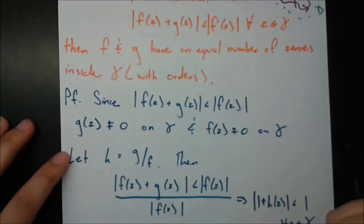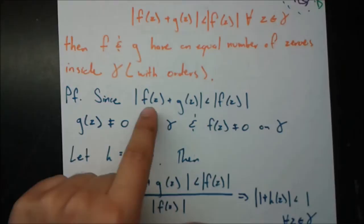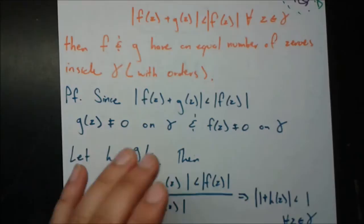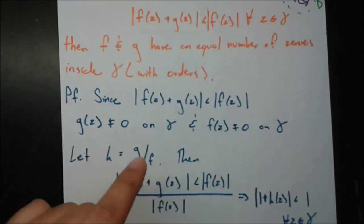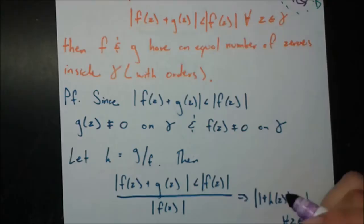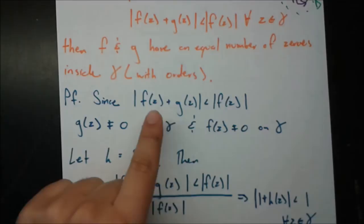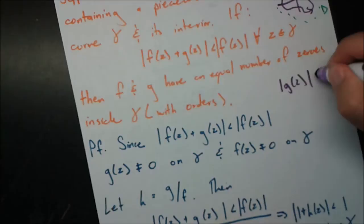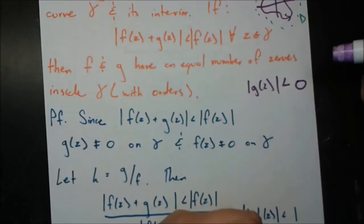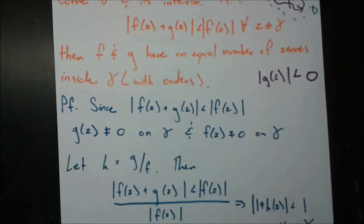Let's go right into the proof. Since the modulus of f(z) + g(z) is less than the modulus of f(z), we can say g(z) is not equal to zero on gamma, and f(z) is not equal to zero on gamma. If g(z) were zero on gamma at some point, that term would vanish and we'd have modulus f(z) < modulus f(z), which is impossible. And if f(z) were zero on gamma, we'd have modulus g(z) < 0, but modulus can never be negative. So both f and g are never zero on gamma.